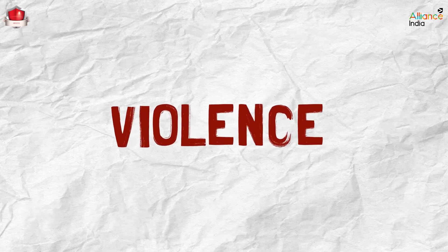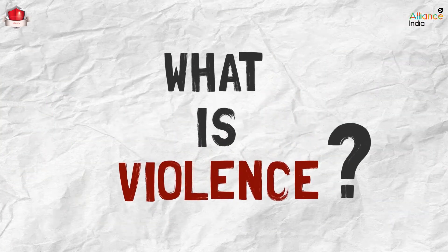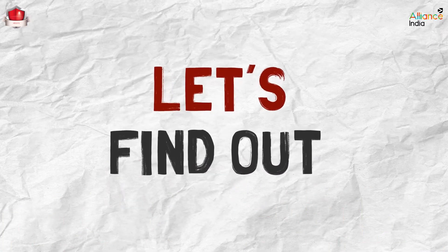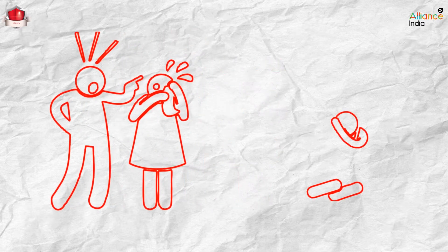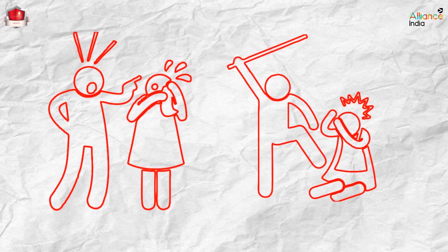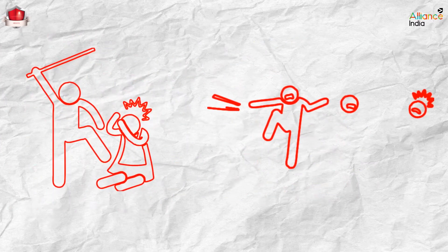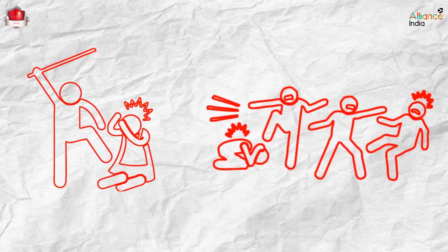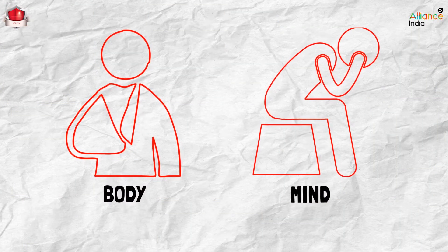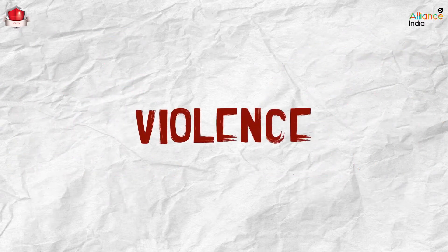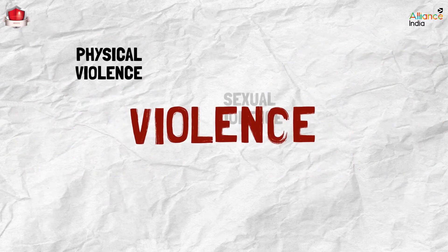Violence — you must have heard the word many times, but what exactly is violence? What does it look like? First of all, violence means any and all those situations in which a person intentionally uses or threatens to use their power or physical force against another person or community. Remember that violence affects both the body and the mind of the victim, and most importantly, violence can appear in different forms in different situations.